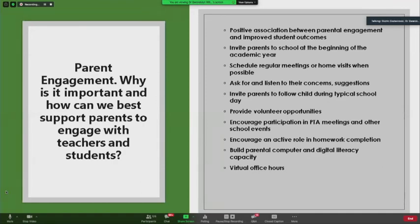So now let's talk a little bit about parent engagement. You know your families and your students better than I do. But these are just some of the best practices that have been proved successful in other settings. But you will need to modify these to fit your circumstances. So we know that there is a connection between student outcomes and parental engagement. And some of the things that you can do would be to invite parents to school at the beginning of the year. Schedule regular meetings and home visits. Ask for their concerns and suggestions. Invite them to follow their child through a typical school day. Provide volunteer activities and opportunities. Encourage participation in PTA meetings and other school events. Ask them to engage actively in homework completion. And this is a good one. Build parental computer and digital literacy capacity so that they can work with their students in that way. And also the virtual office hours.